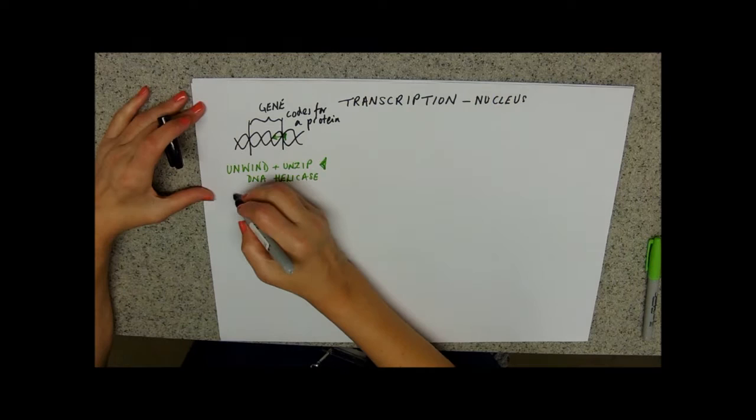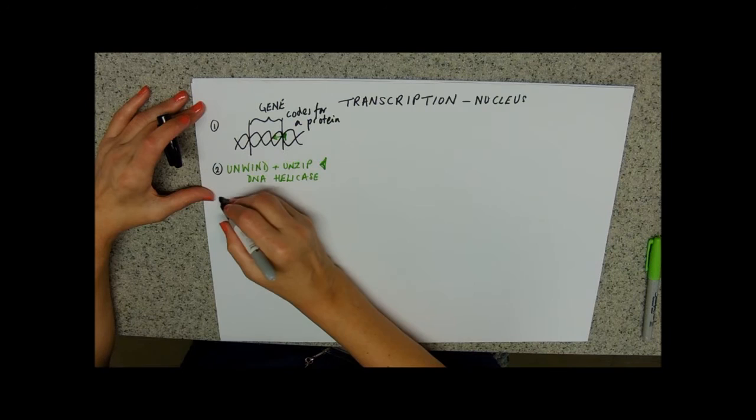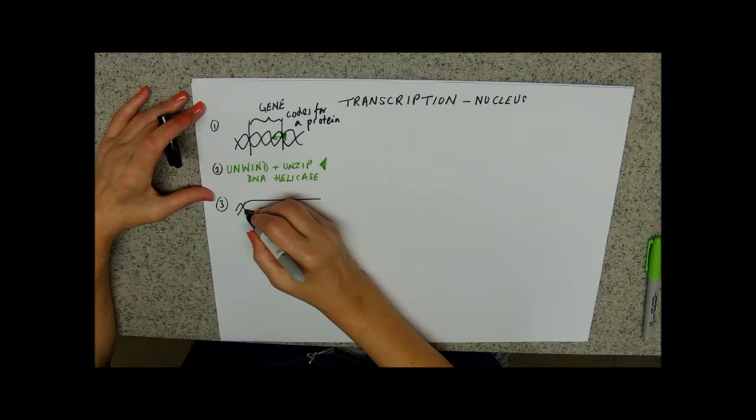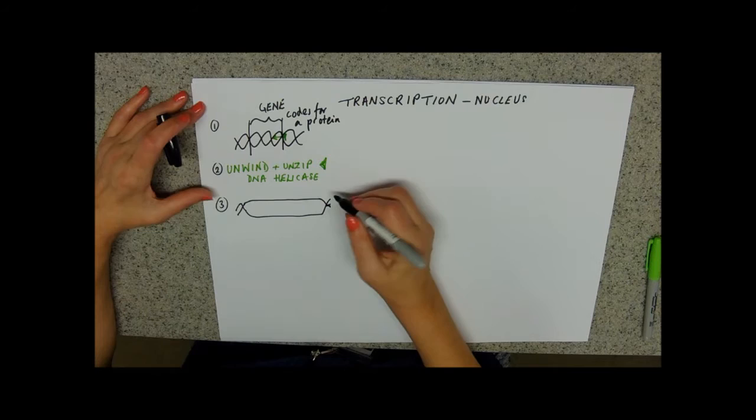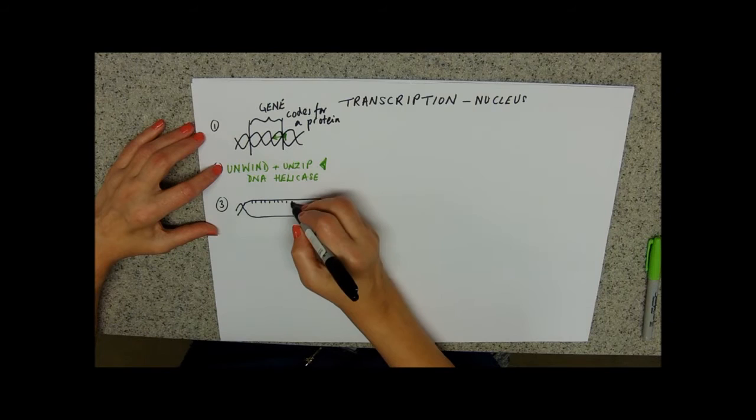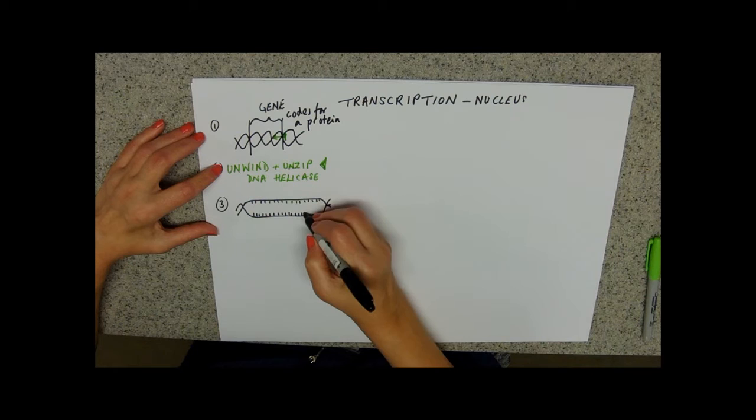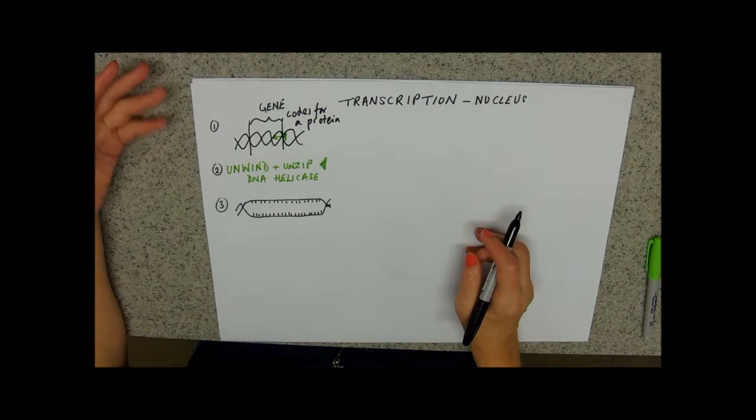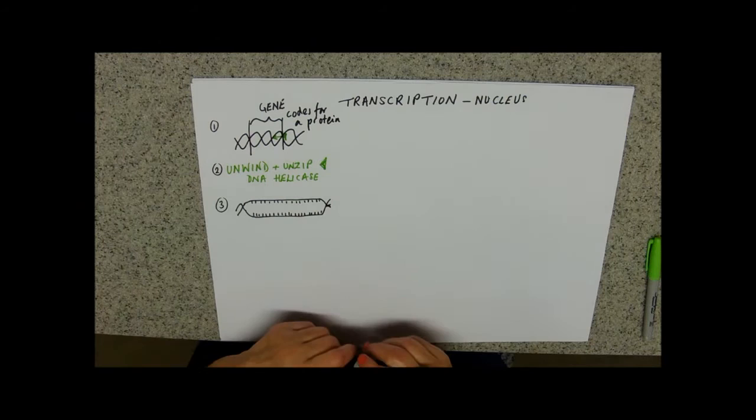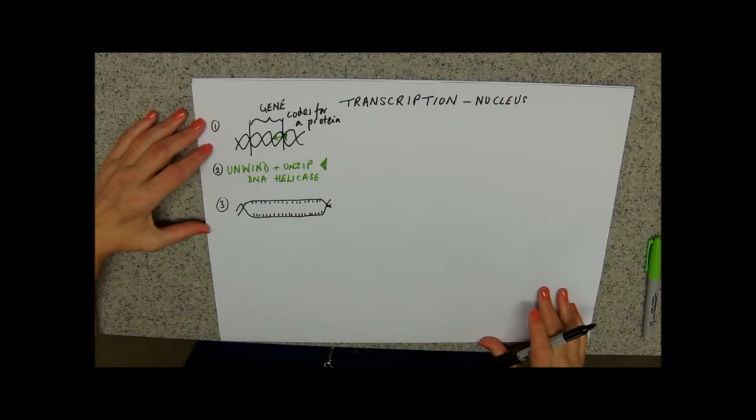Then we've got our exposed bases. And, of course, we'll have two sets of exposed bases. We'll have a set on one side and we'll have its complementary set on the other side. Apologies, those aren't very opposite each other. Now, we only need one base sequence to code for one protein. So, we're only going to copy one side by complementary base pairing.